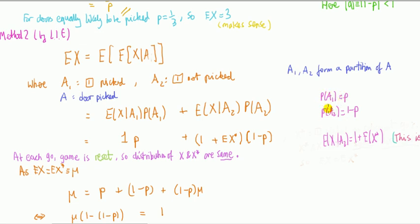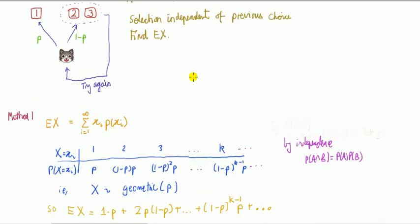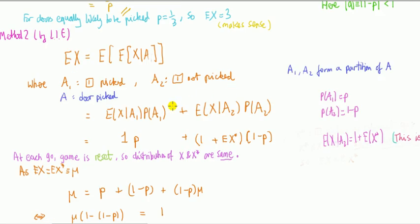A could partition A1, A2, where A1 stands for door one is picked, A2 stands for door one is not picked. So A1, A2 form a partition of A. Writing out what this actually means in this case, it's this.